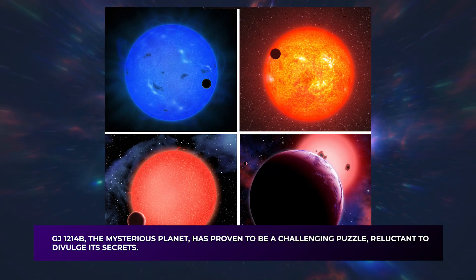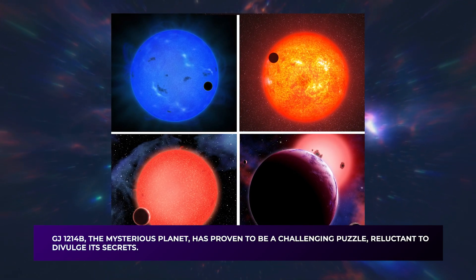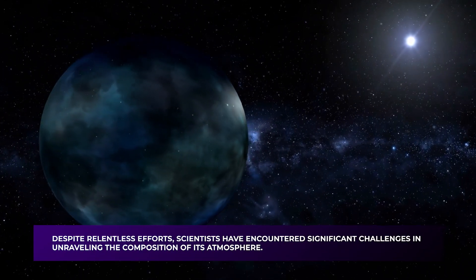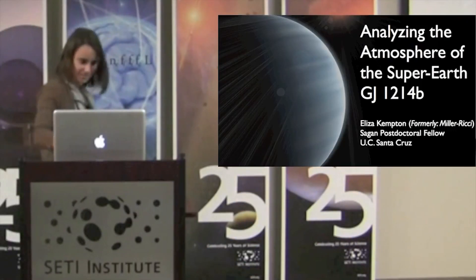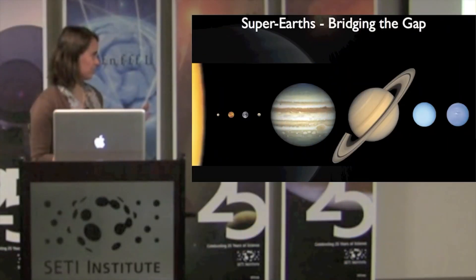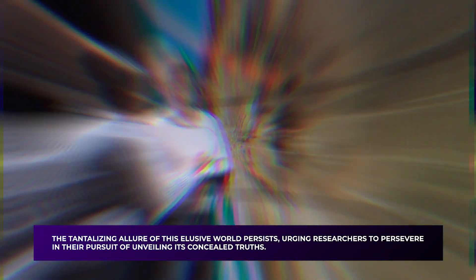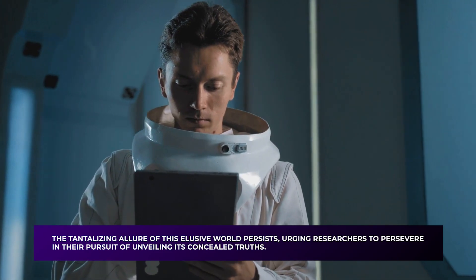GJ-1214b, the mysterious planet, has proven to be a challenging puzzle, reluctant to divulge its secrets. Despite relentless efforts, scientists have encountered significant challenges in unraveling the composition of its atmosphere. Eliza Kempton acknowledges the quest to comprehend the celestial enigma, highlighting the prolonged endeavor to decipher the atmospheric mysteries surrounding GJ-1214b. The tantalizing allure of this elusive world persists, urging researchers to persevere in their pursuit of unveiling its concealed truths.